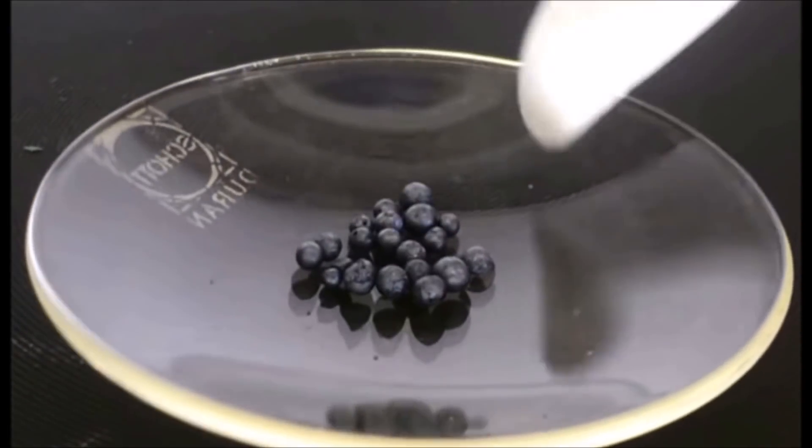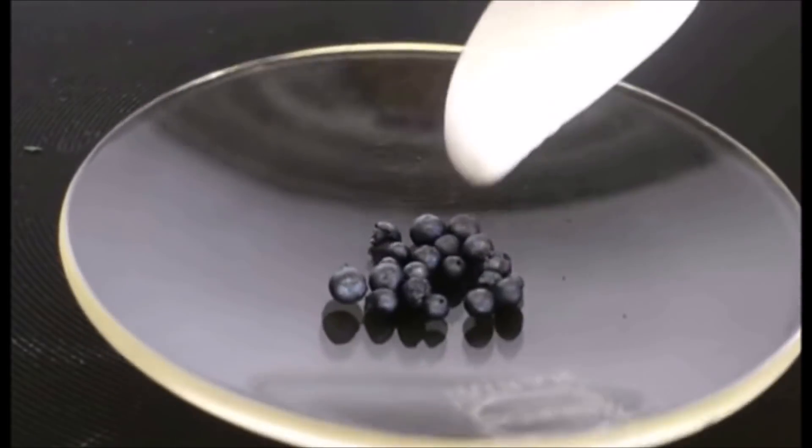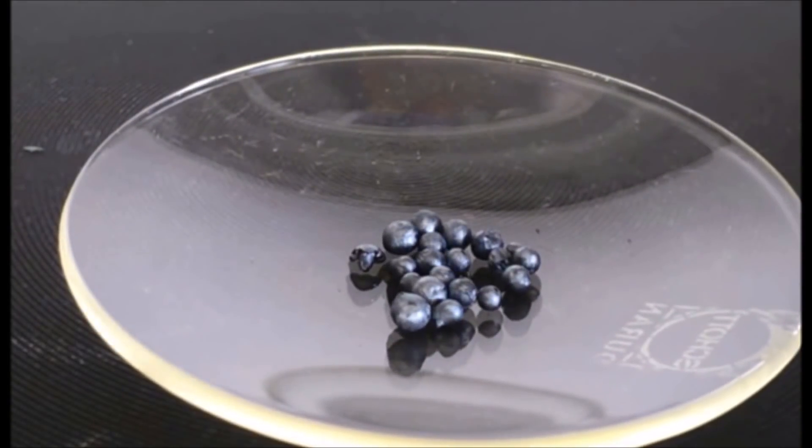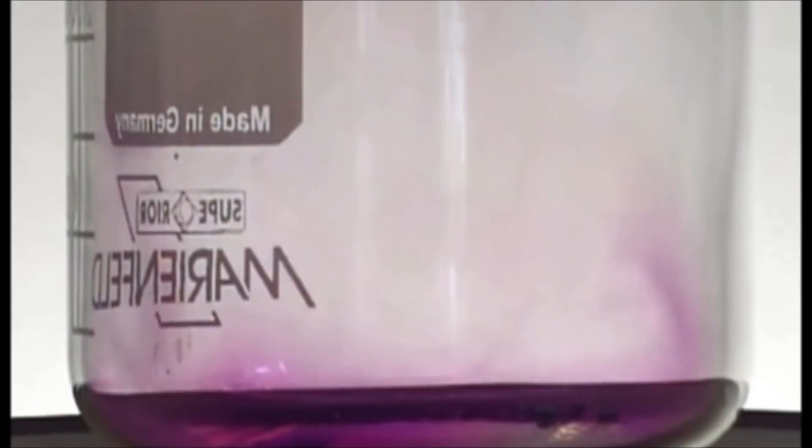Iodine is a gray solid. If we get those pellets and we put it in a beaker on a hot plate, we are going to notice immediately that the solid releases purple vapors. That is the sublimation of iodine from solid to gas.